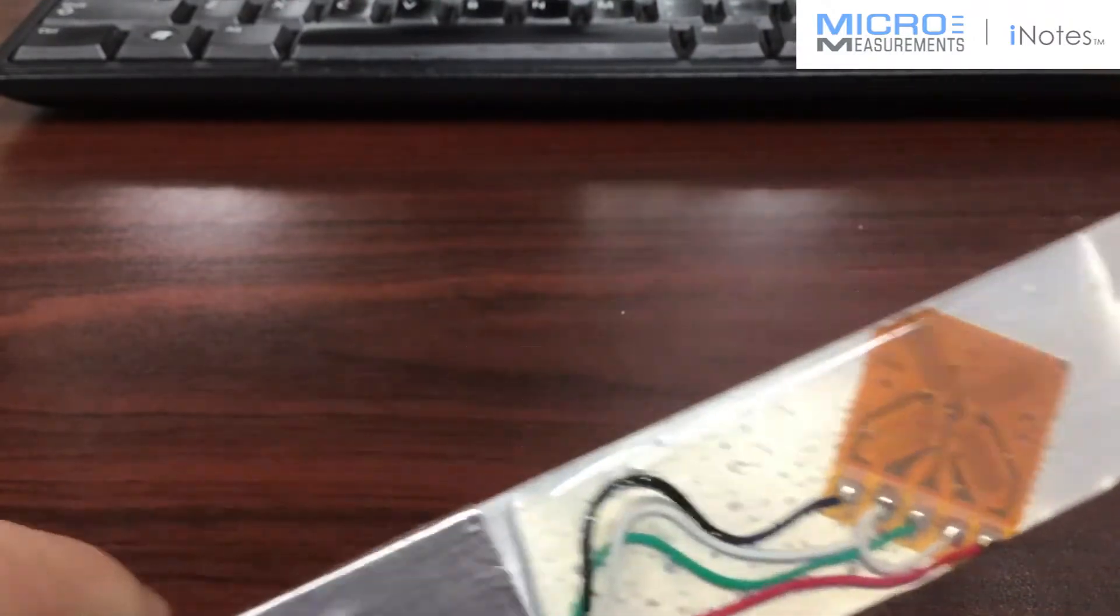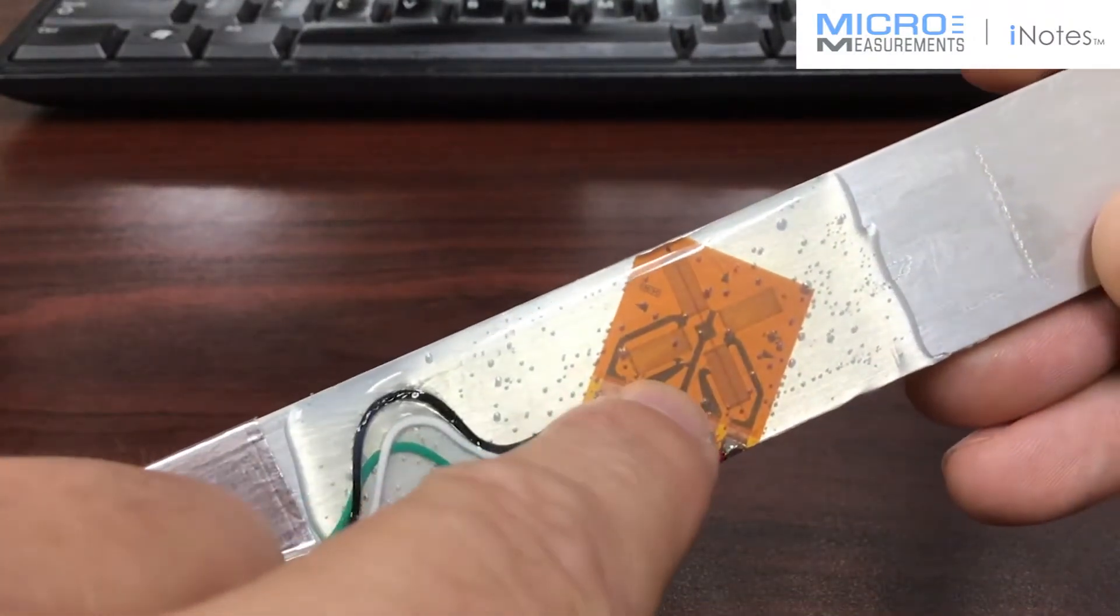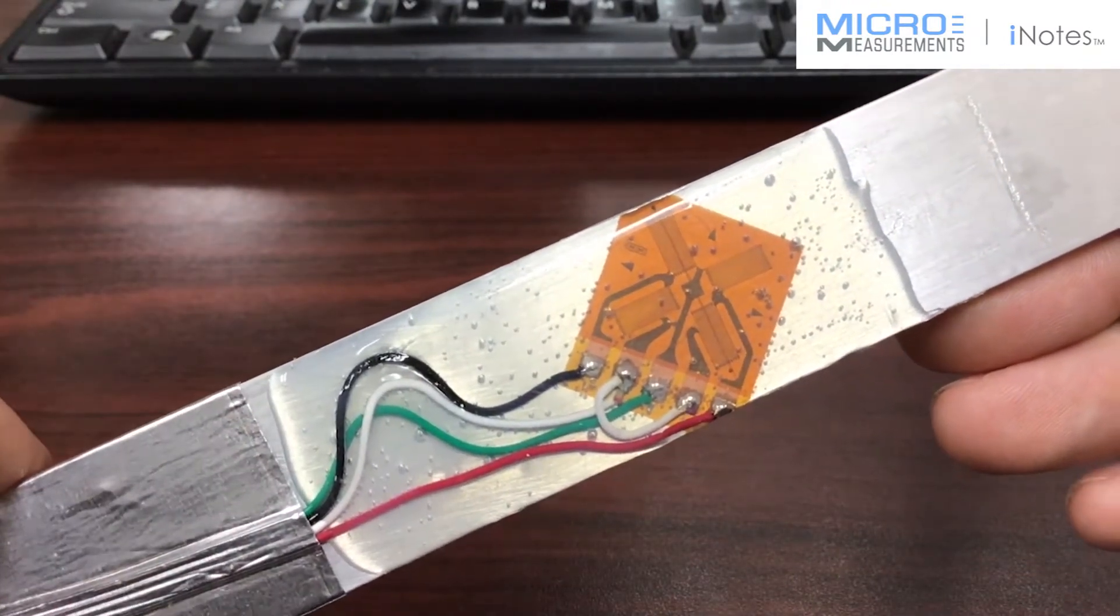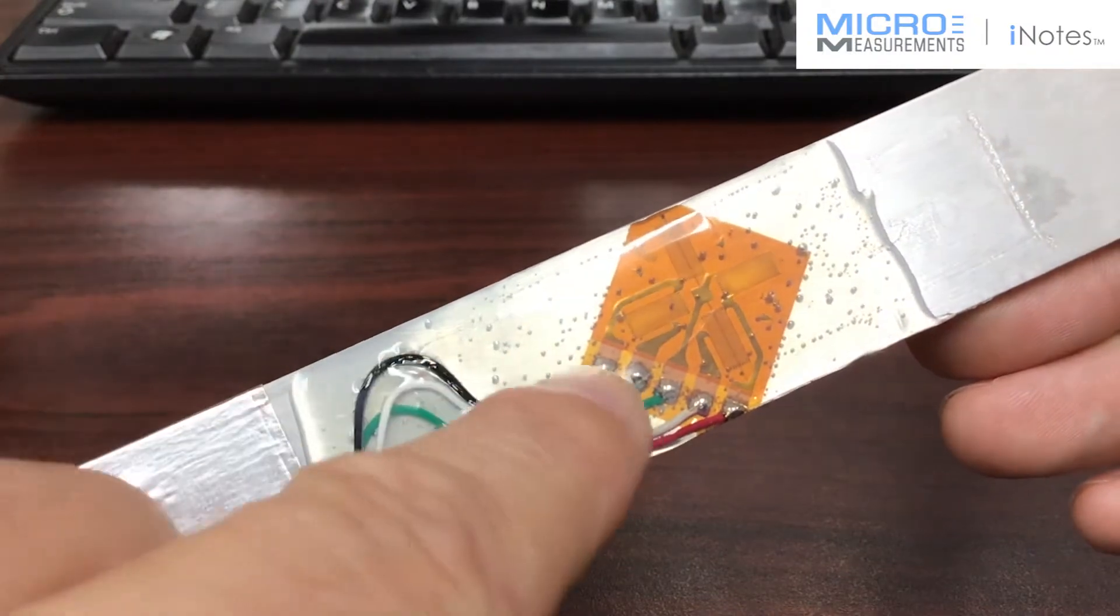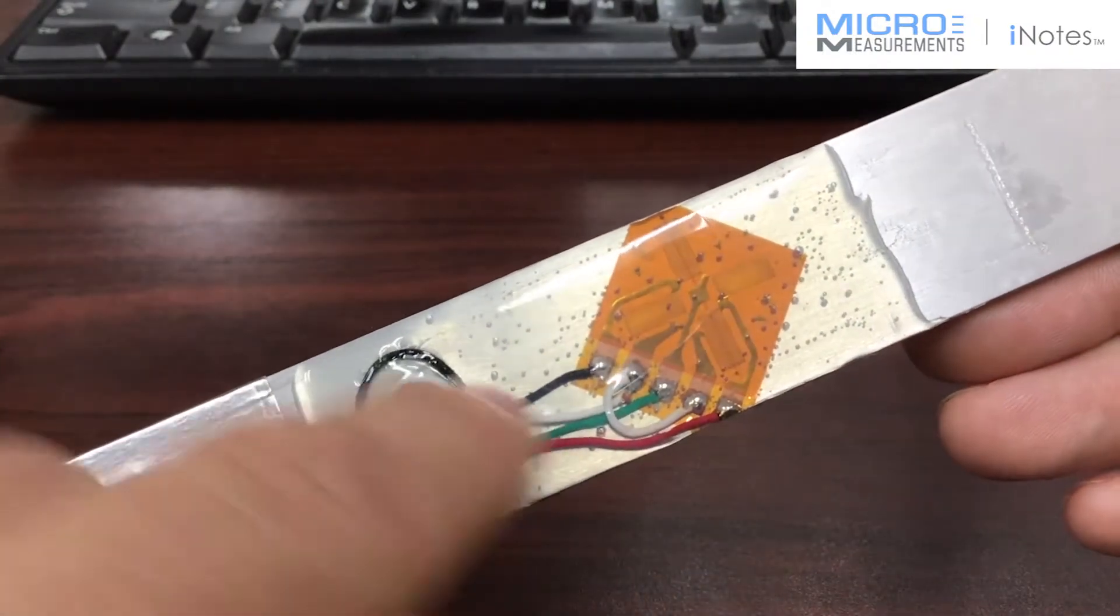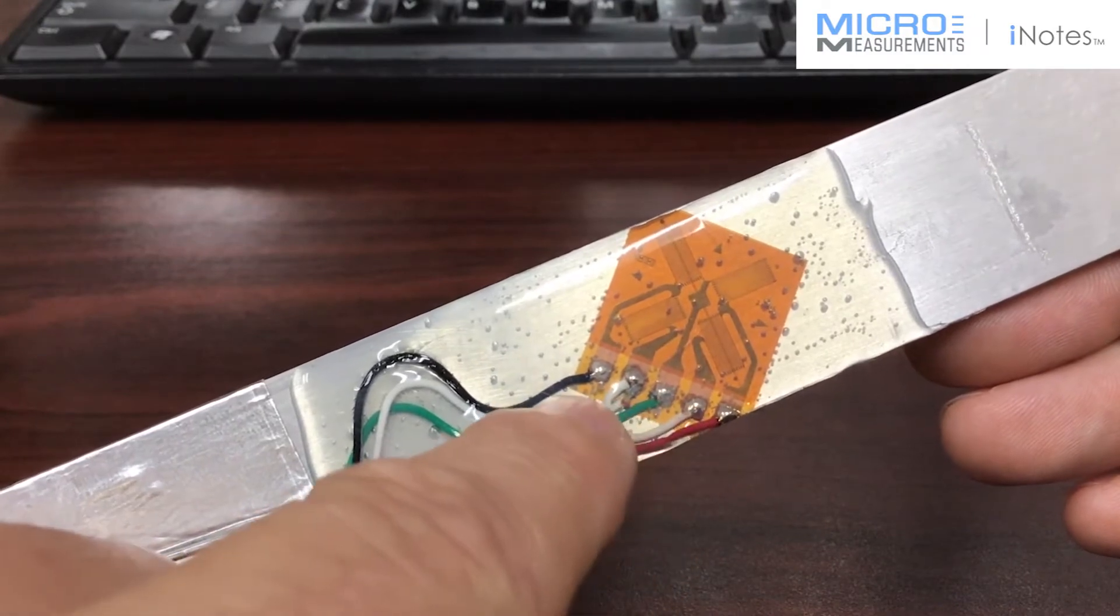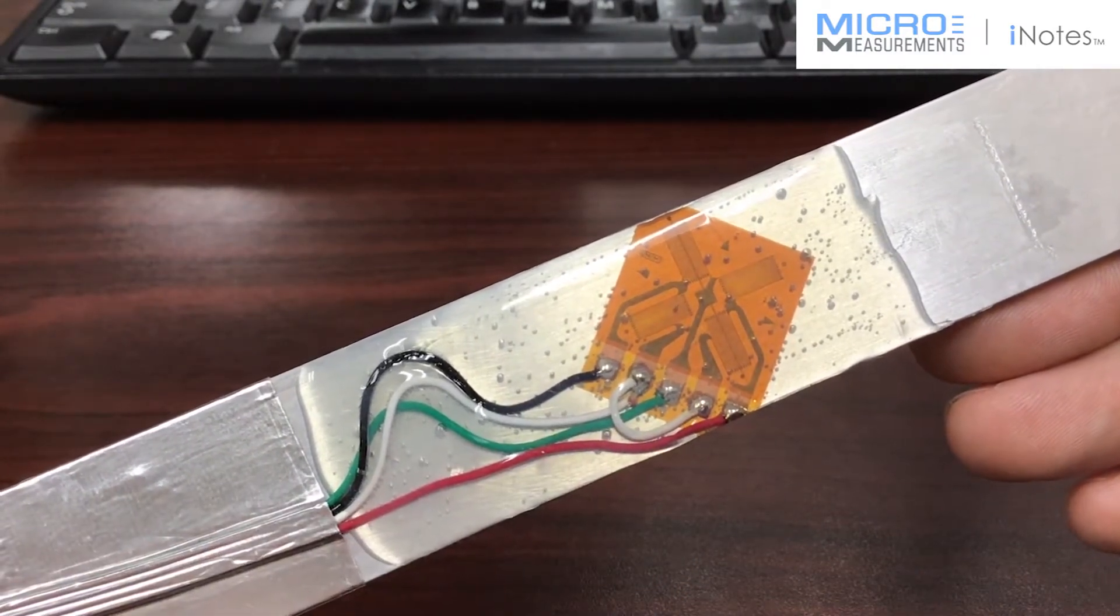And the intent for this gauge is to take it and glue it on to a shaft and measure, for example, a torsional load. You'll notice that it's got five soldering connections down here at the bottom, and we'll use those five tabs to connect it as a full Wheatstone bridge.